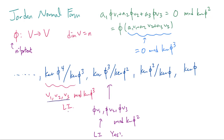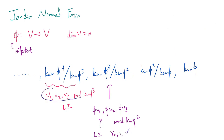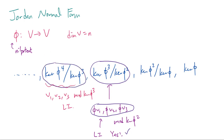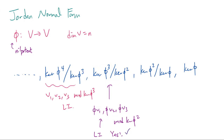Since V1, V2, V3 were linearly independent mod kernel of phi cubed, that's telling us that a1, a2, a3 are going to be zeros, which means we have this linear independence as well. What this tells us is that if V1, V2, V3 mod kernel of phi cubed were a basis, then phi(V1), phi(V2), and phi(V3) mod kernel of phi squared are linearly independent. In other words, the dimension of kernel of phi cubed modded by kernel of phi squared cannot be smaller than the dimension of kernel of phi to the 4th modded by kernel of phi cubed.